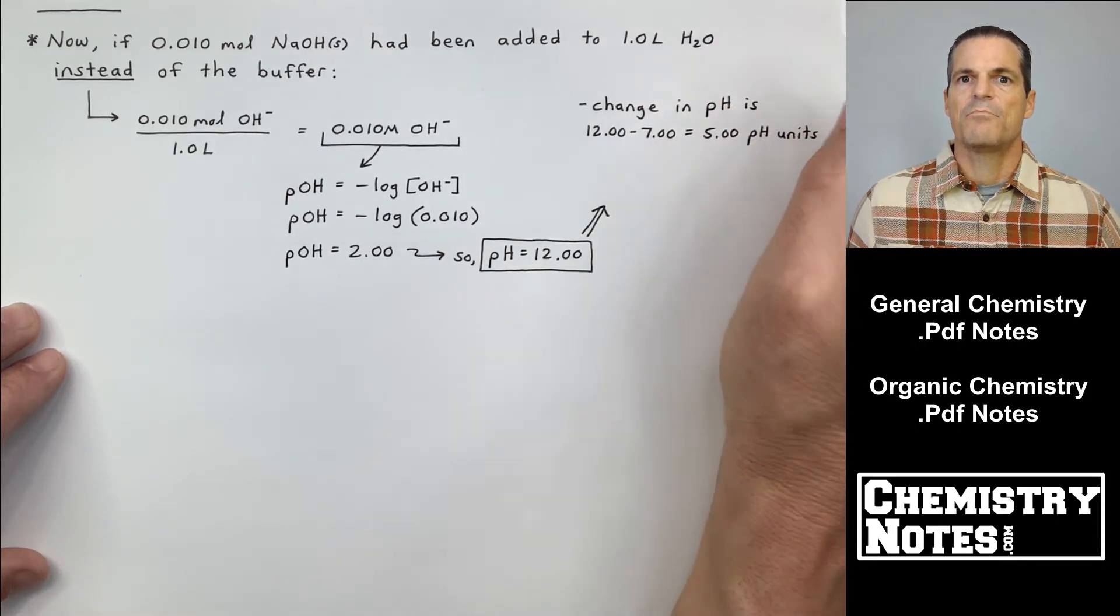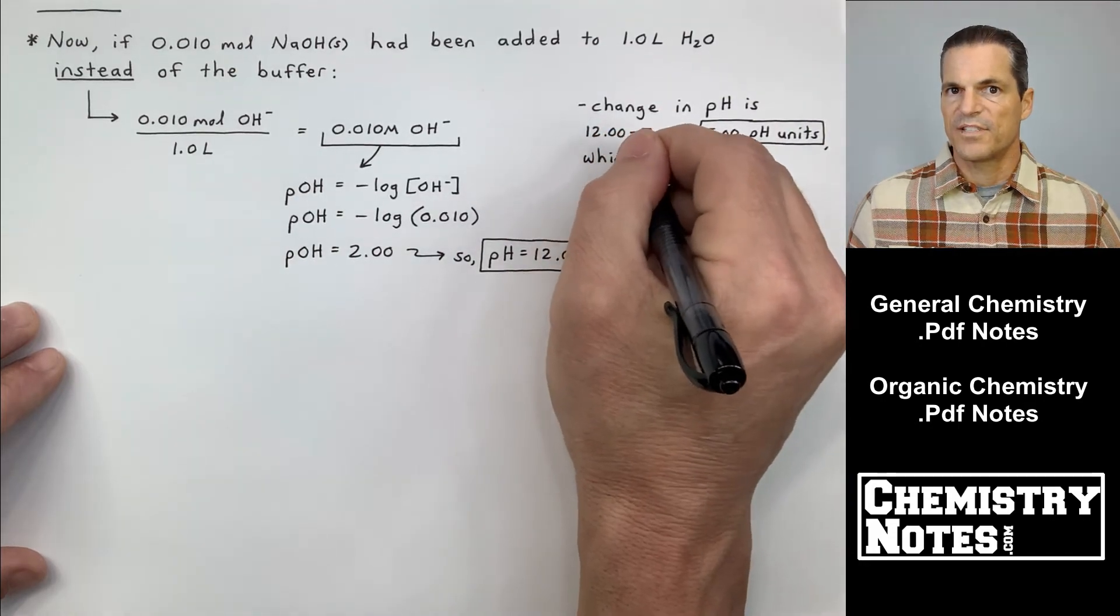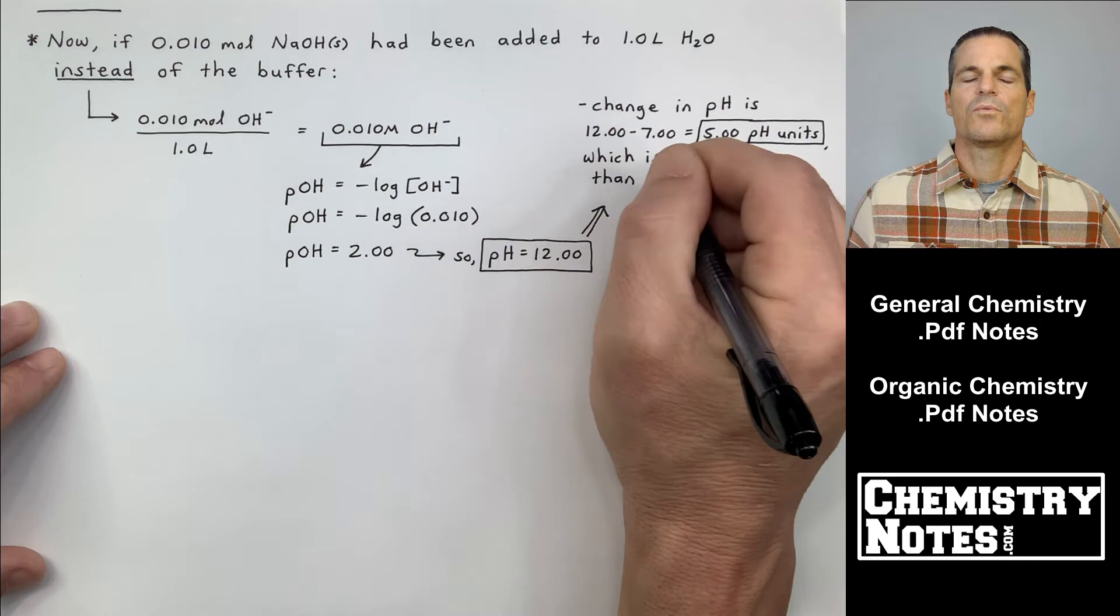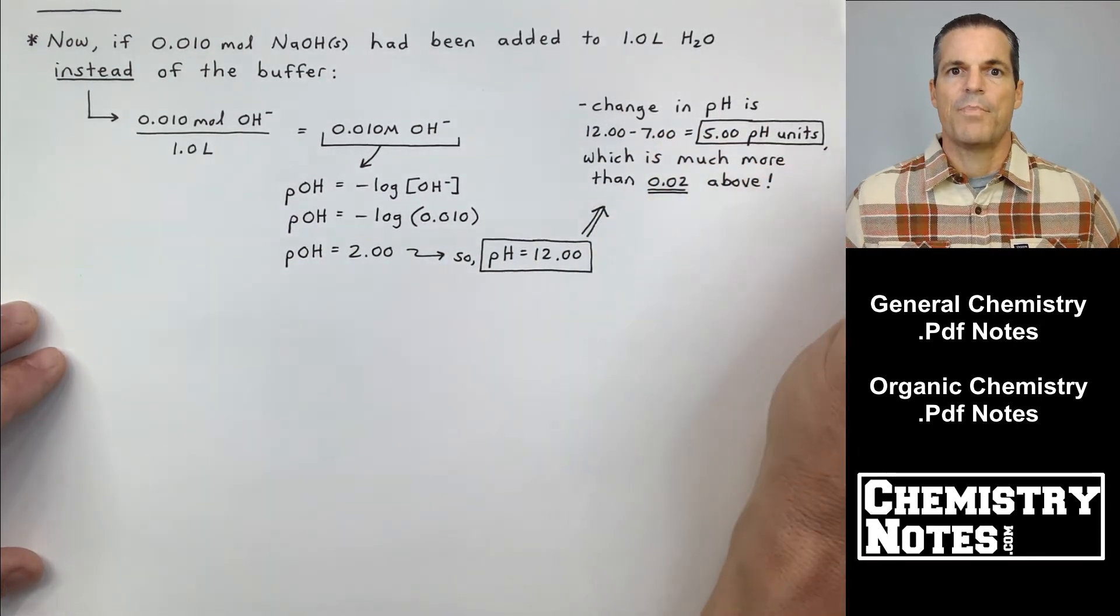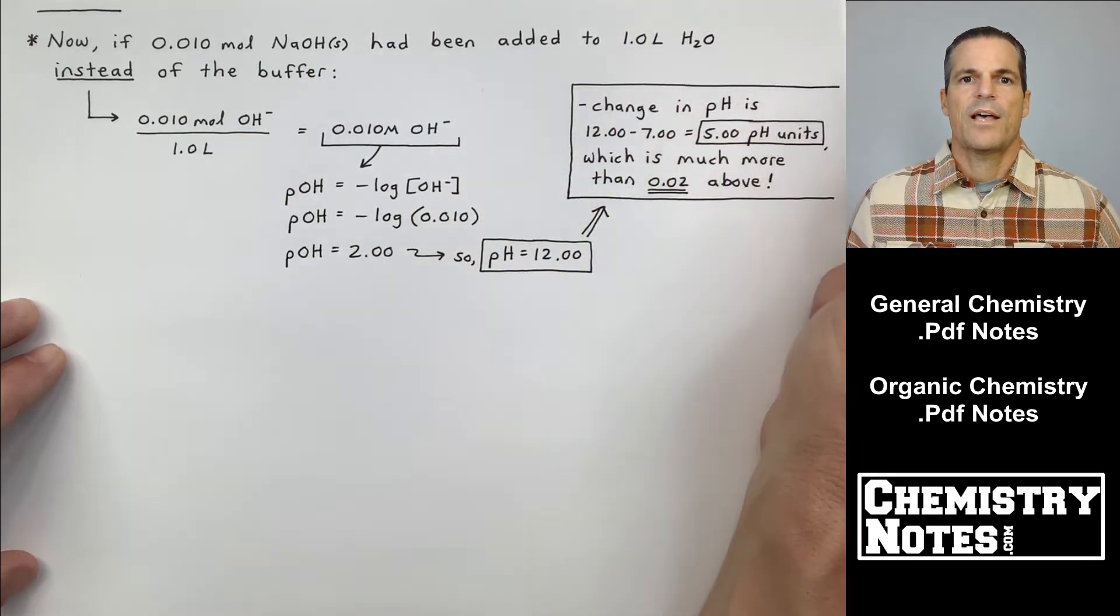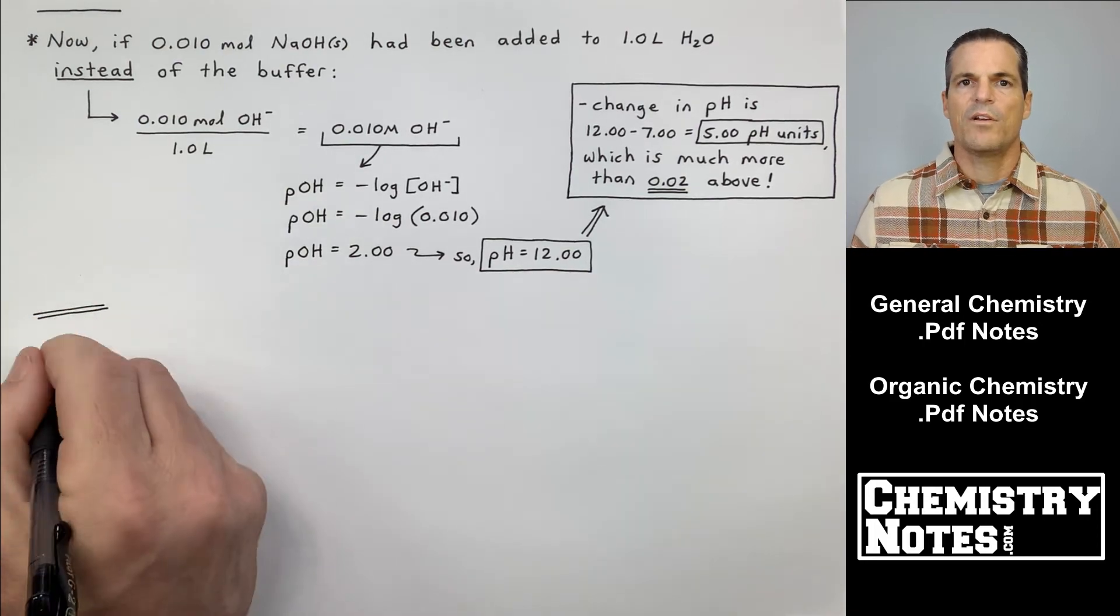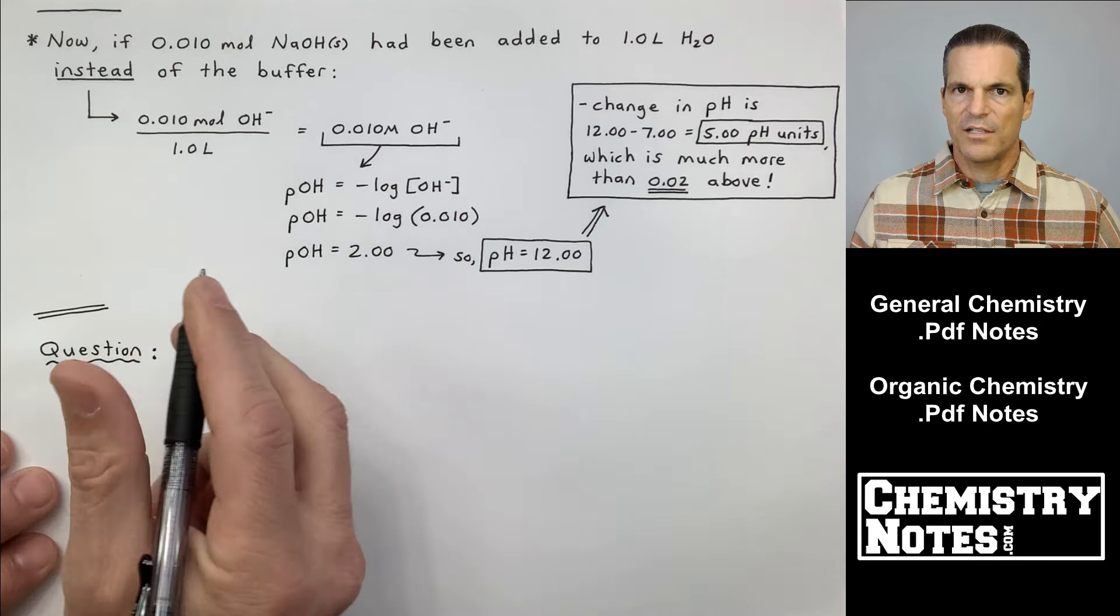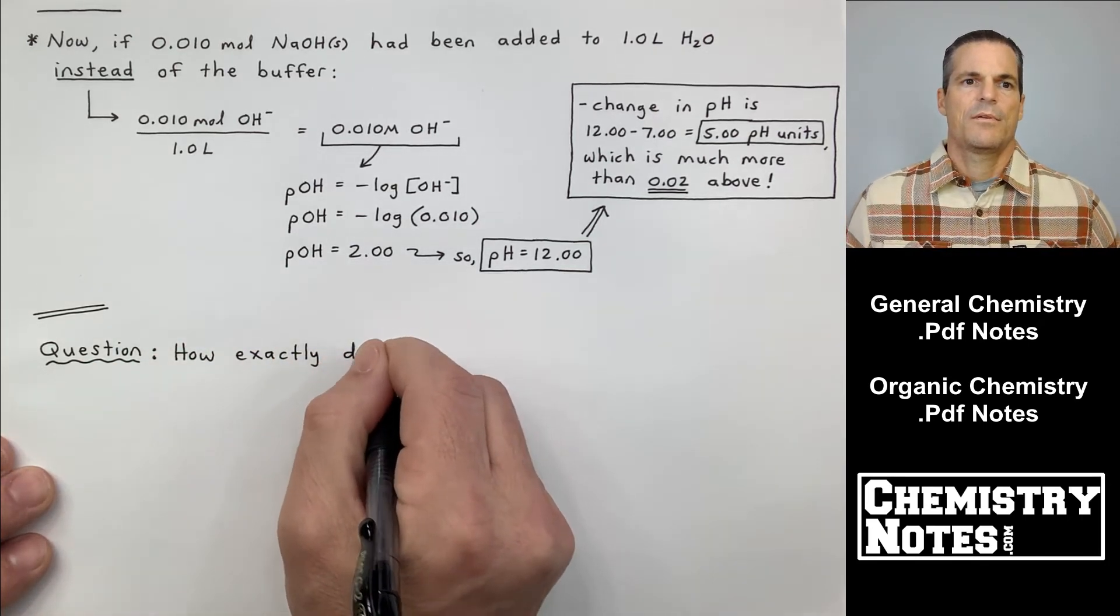It skyrocketed 5 pH units. And it says here, change in pH is 12.00 minus neutral water of 7 equals 5.00 pH units, which is way, way more than the 0.02 pH units that our buffer was able to withstand. So that should clarify it there. In water, right, there was no way to get rid of the OH-, it stays around. And if it sticks around, you get an enormously high pH value.